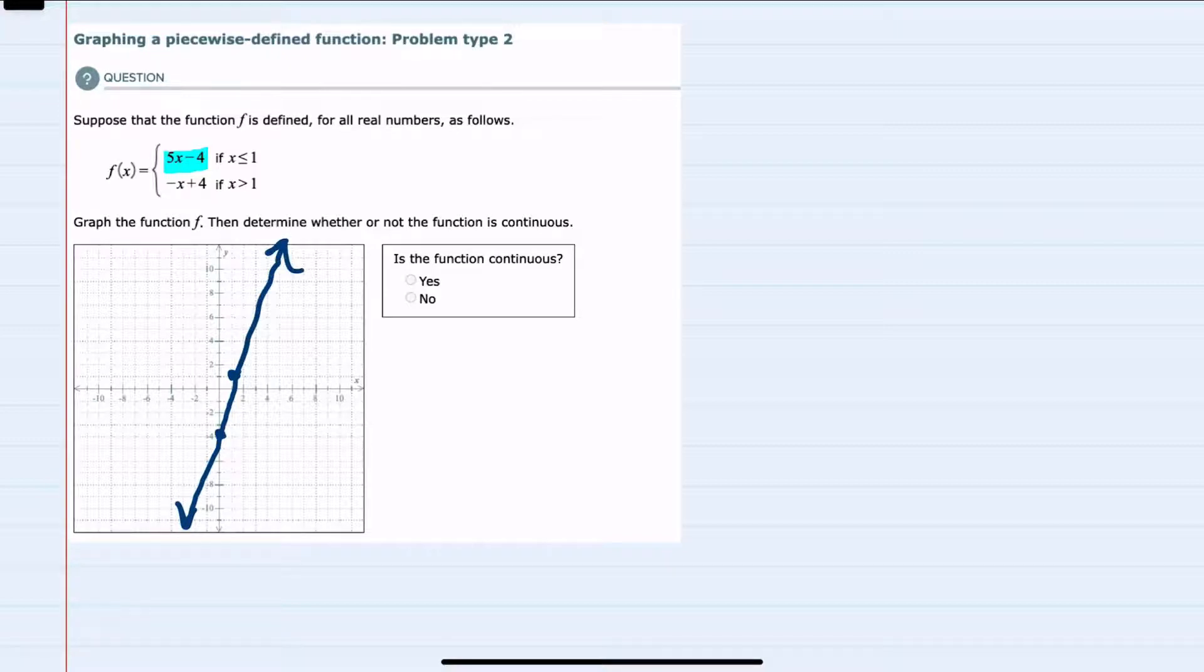However, we have just the piece here where x is less than or equal to 1, so I would actually remove everything beyond where x equals 1, and then I can move to the second piece, which says f of x equals negative x plus 4.